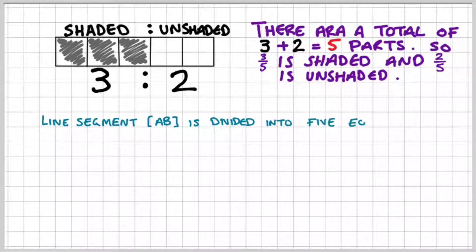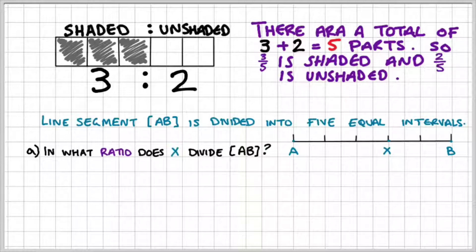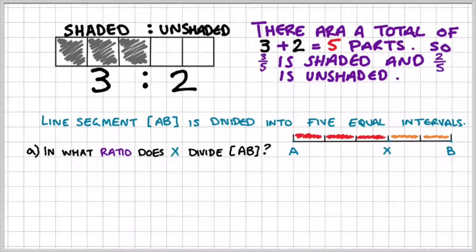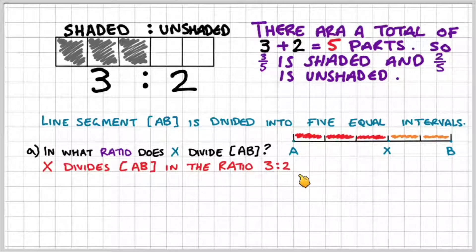Let's look at an example using a line segment. Line segment AB is divided into five equal intervals. Part A: in what ratio does X divide the line segment AB? If we colour it in, you can see that there's three parts in AX and then two parts in XB. So X divides the line segment AB in the ratio 3 to 2.